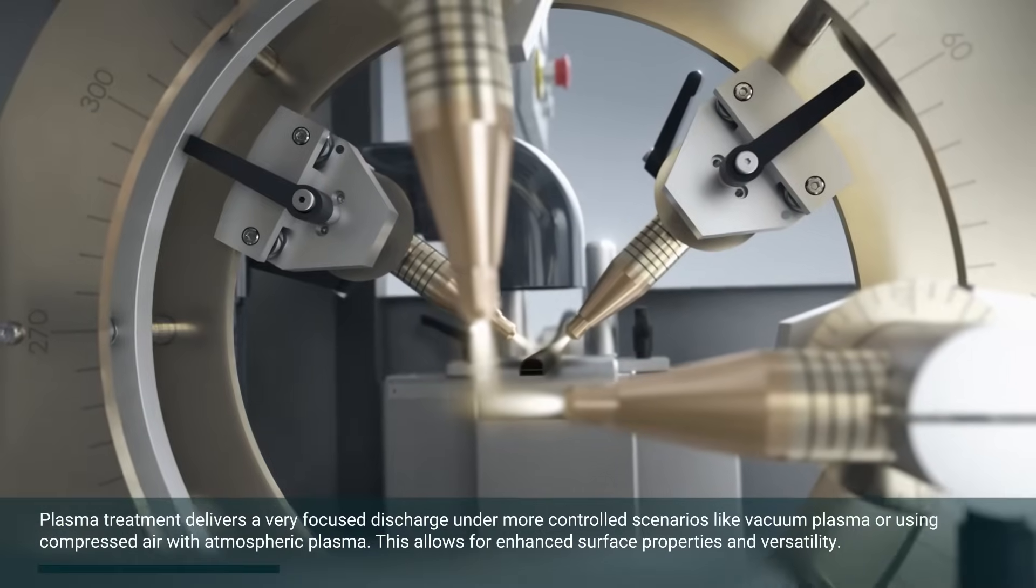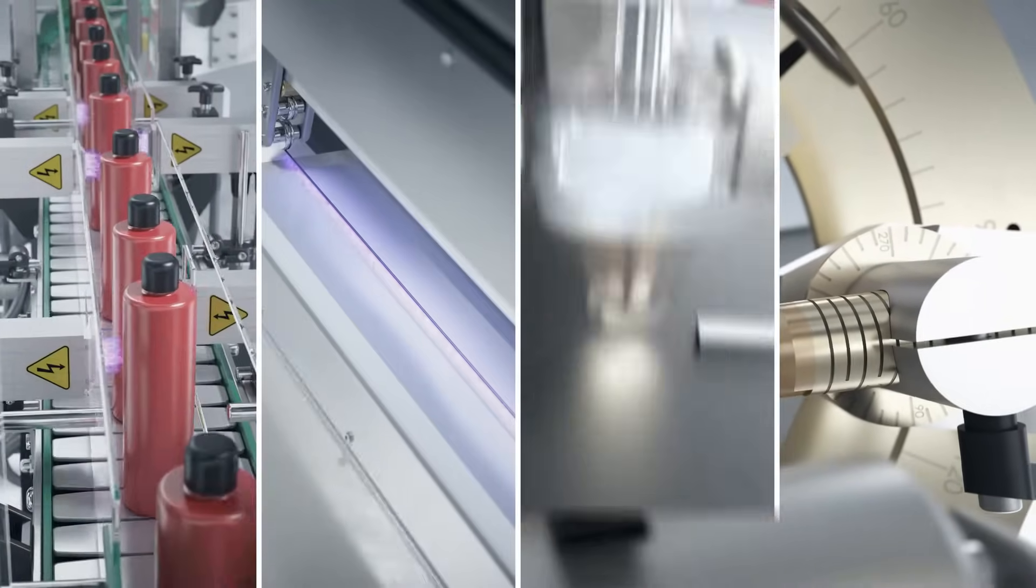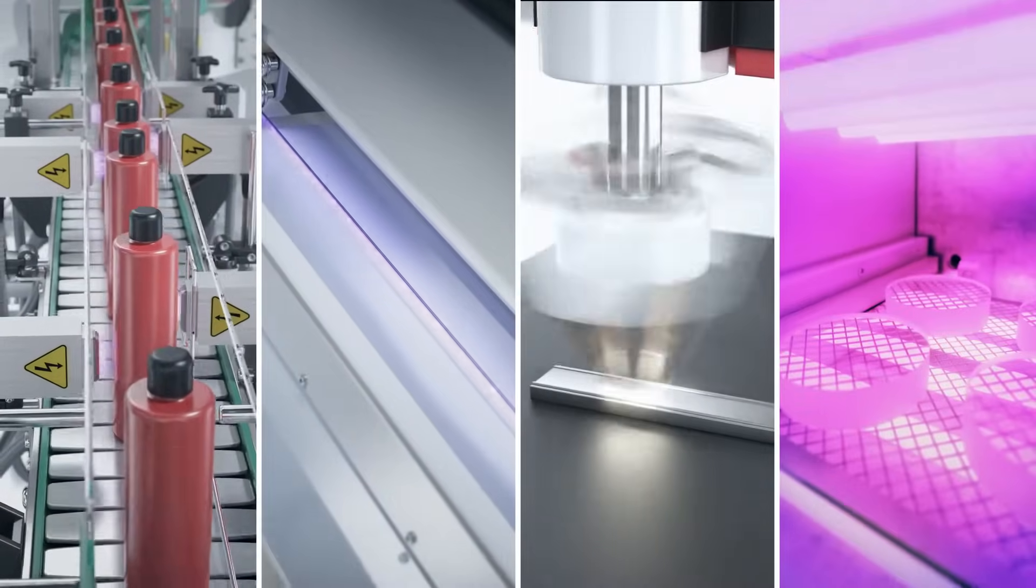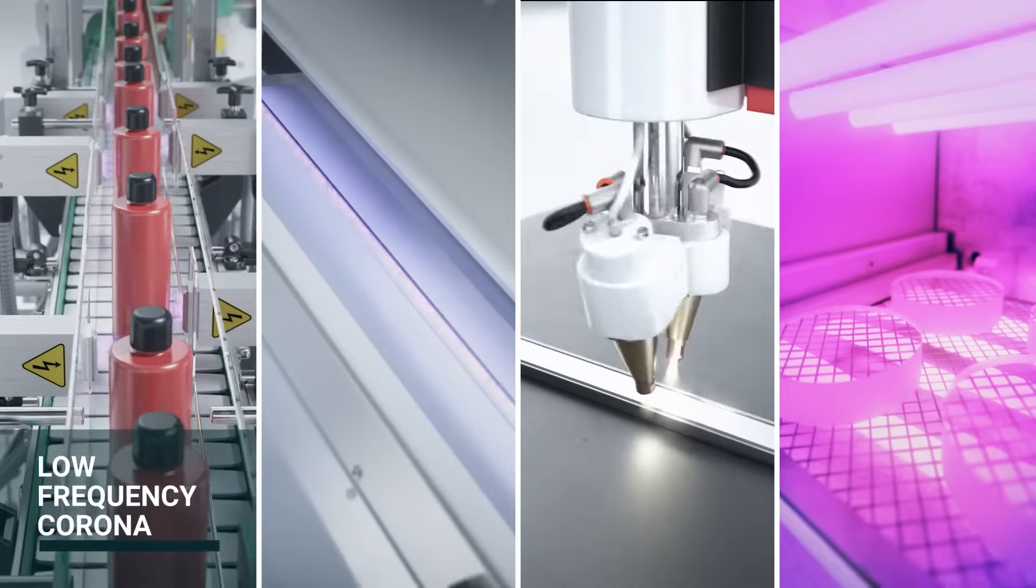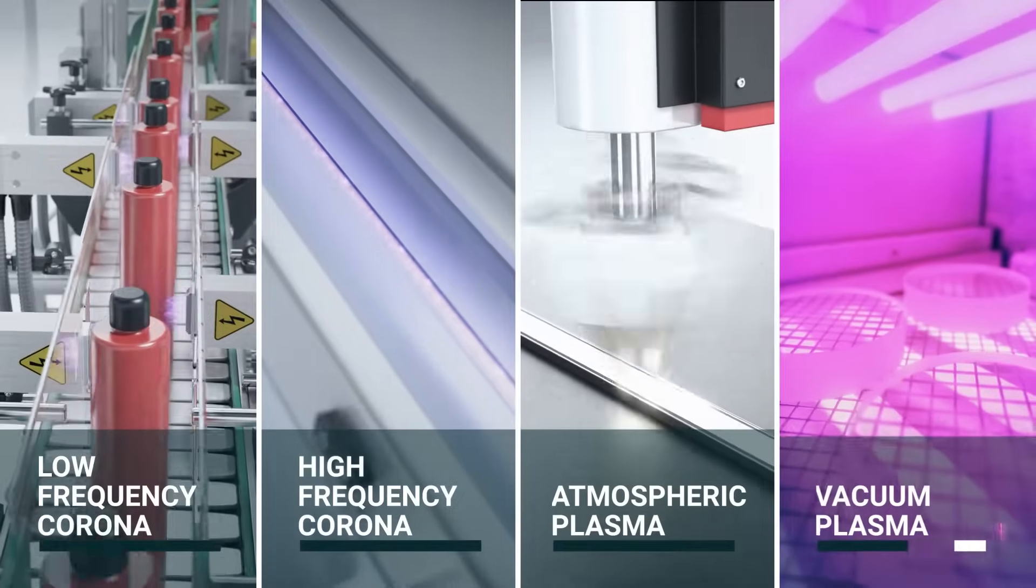This allows for enhanced surface properties and versatility. There are four techniques that we use at Tantec involving plasma and corona: low-frequency corona, high-frequency corona, atmospheric plasma, and vacuum plasma. Each has its advantages and applications.